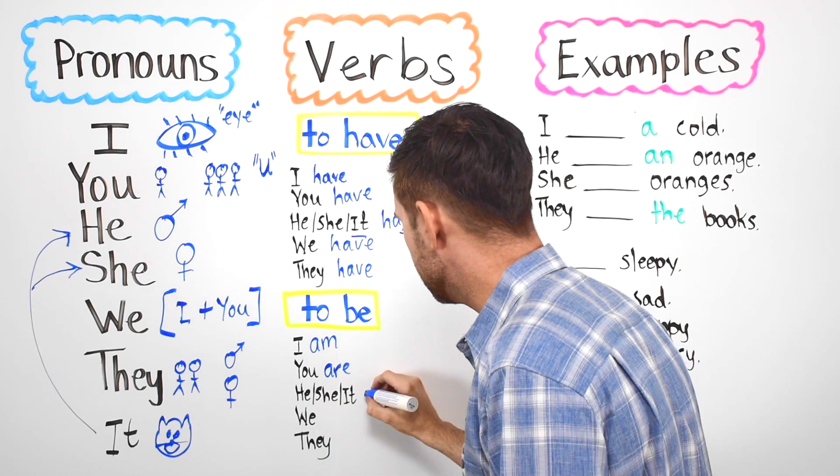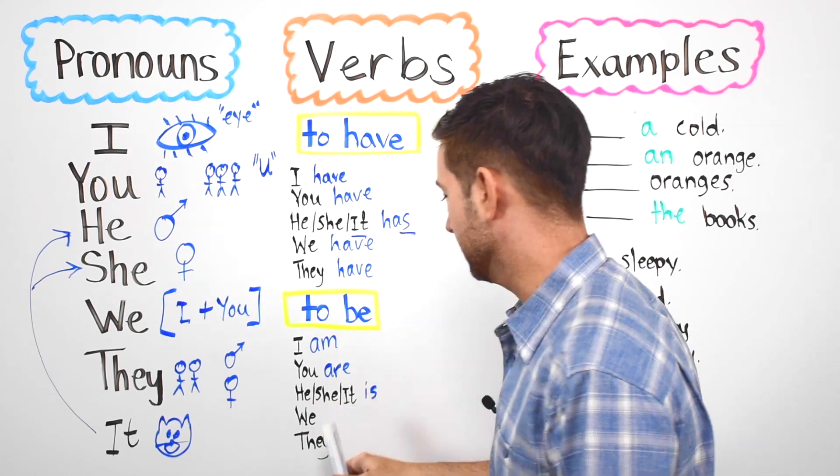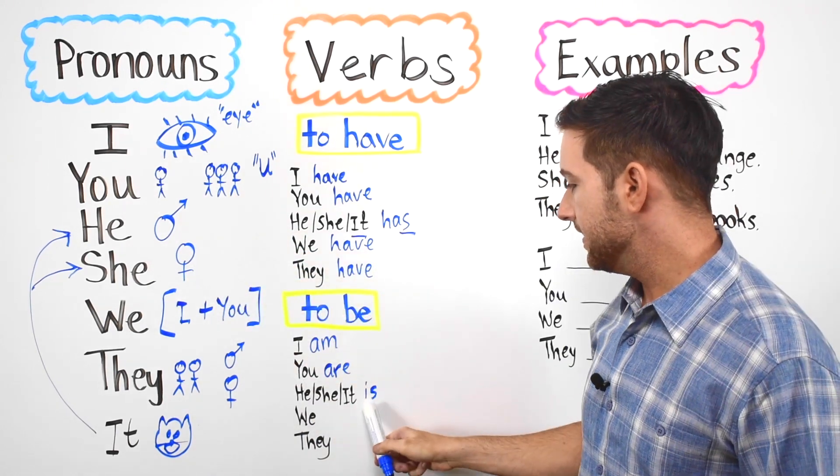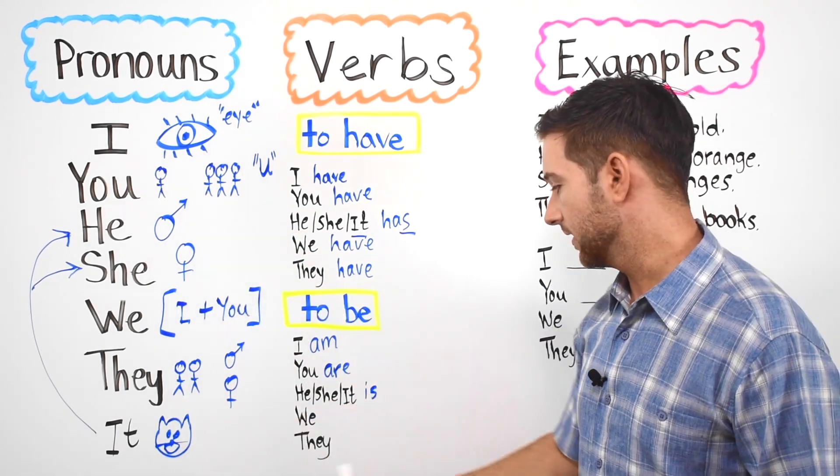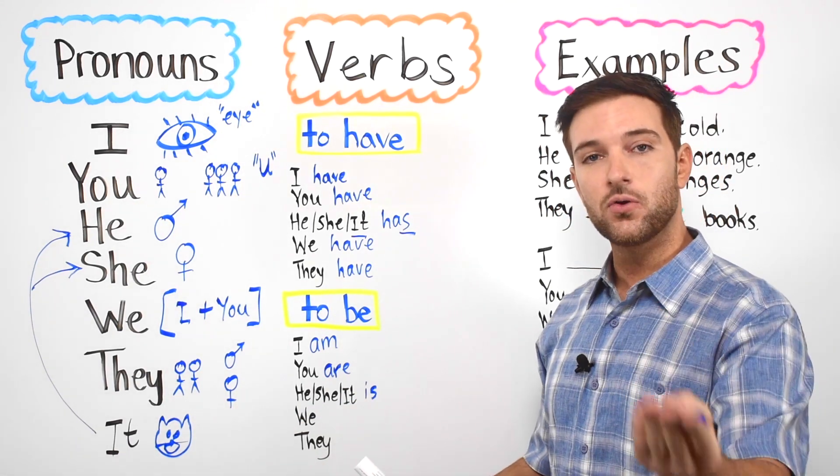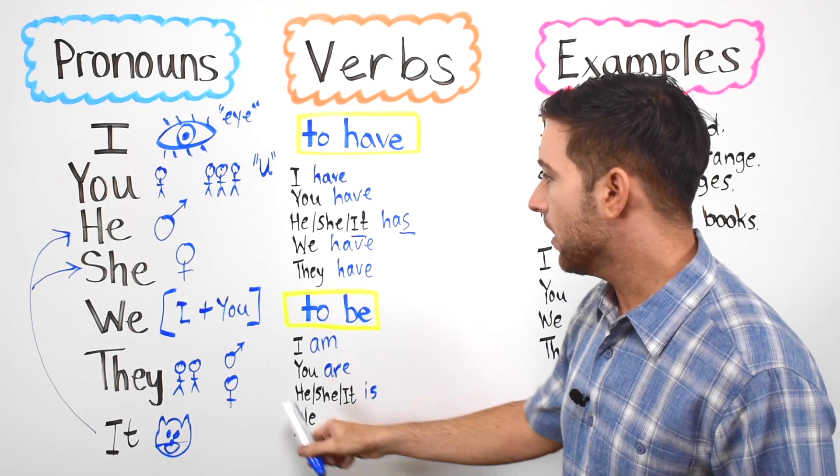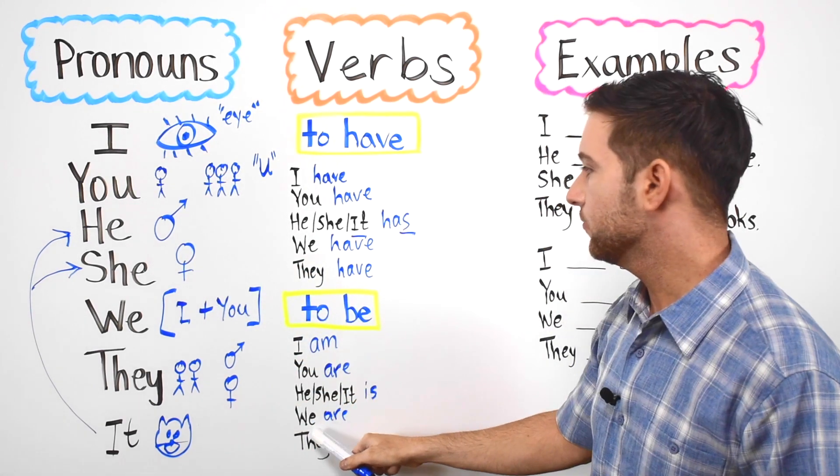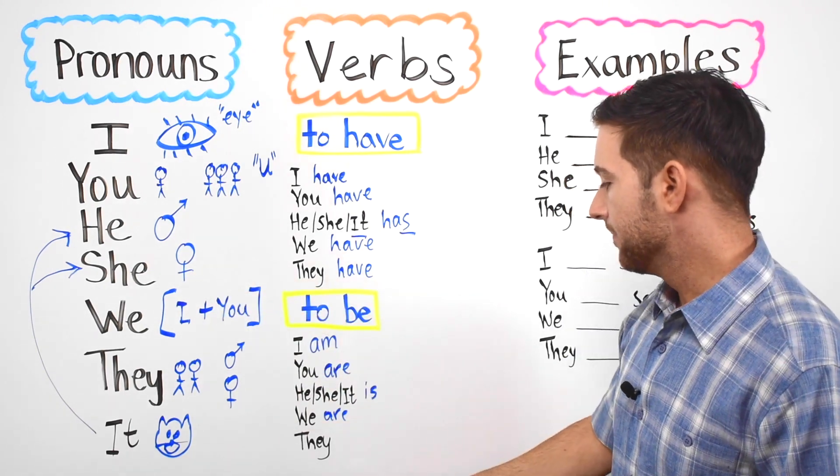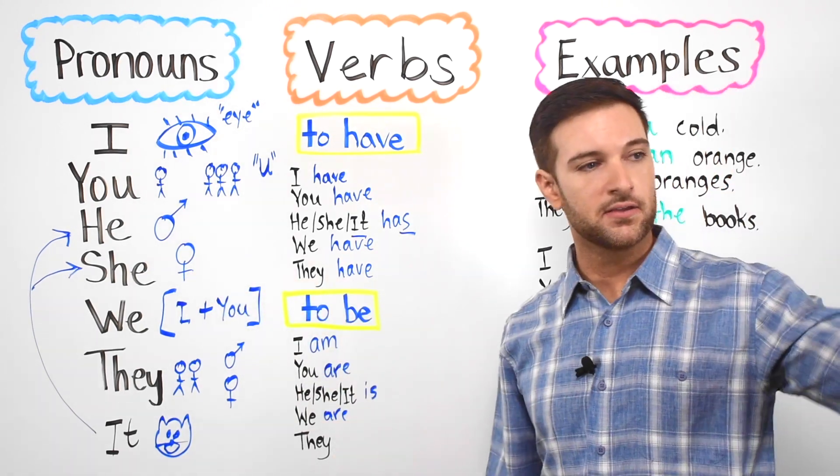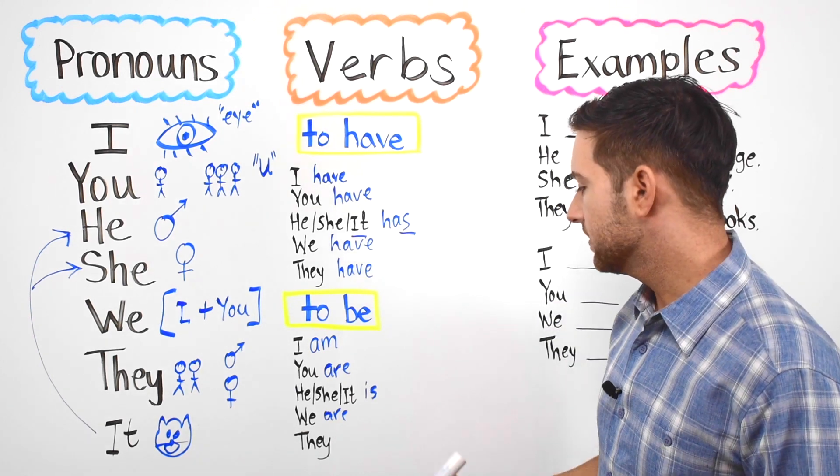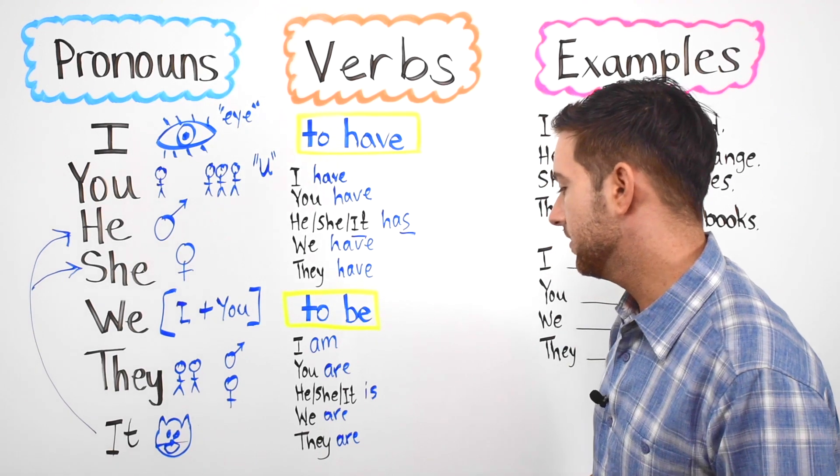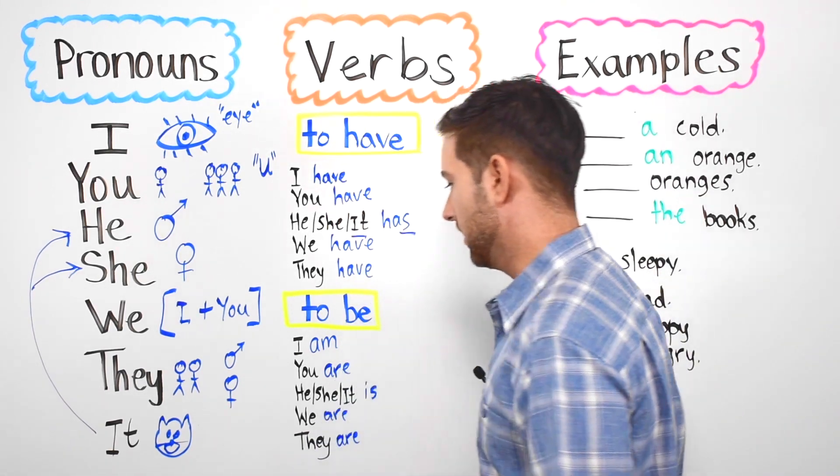He, she, it is. He is a boy. She is a girl. It is a cat. Then we have we. We are boys. Or you can say we are girls. And finally we have they. They are.